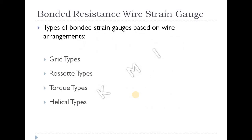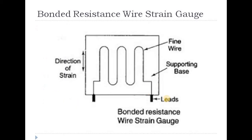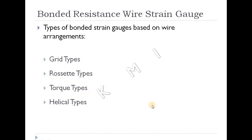There are four types of bonded strain gauge, based on the arrangement of the wire. The wire is uniformly distributed in different arrangements. The four types are: grid type, rosette type, torque type, and helical type.